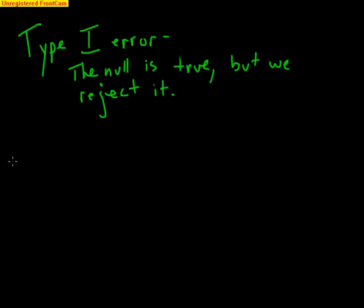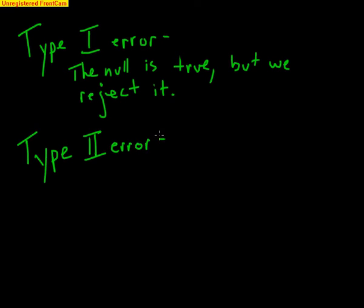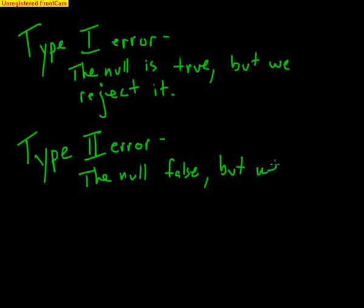The second type of error is called a Type II error — again, Roman numeral number two is what we use. Here, the null is false, but we fail to reject it.